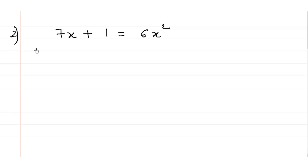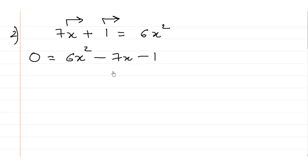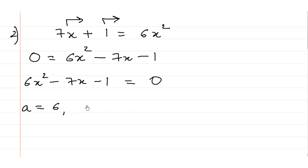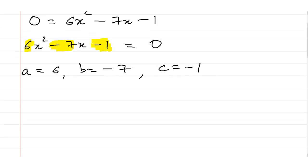Let us have a look at the other example: 7x + 1 = 6x². First of all, let us write this in the standard form. We will take both terms to the other side, so it is 0 = 6x² - 7x - 1, which we rewrite as 6x² - 7x - 1 = 0. So the values are: a = 6, b = -7, and c = -1. Note a, b, and c's values only after writing in the standard form.